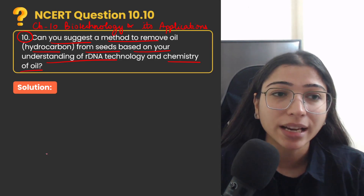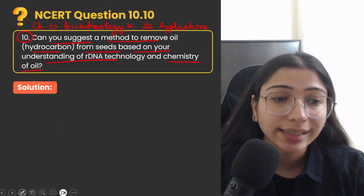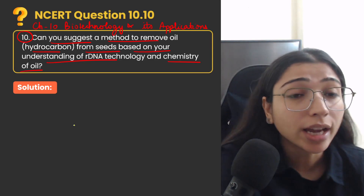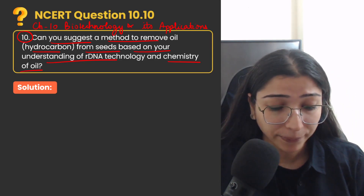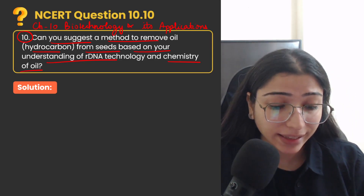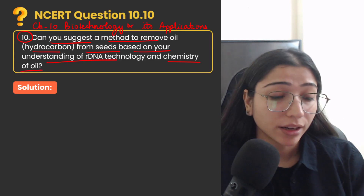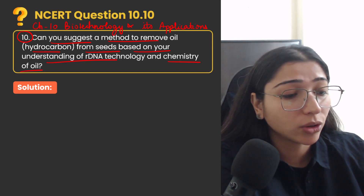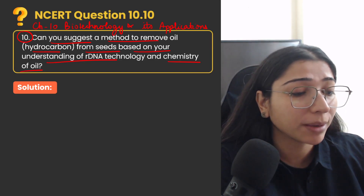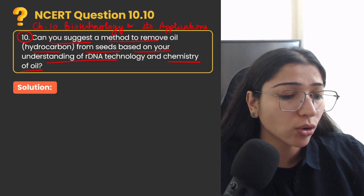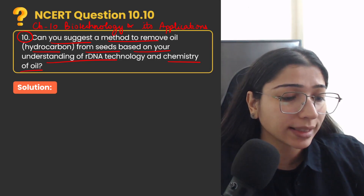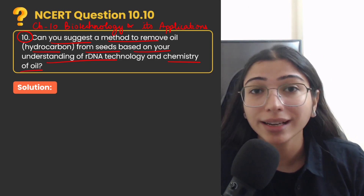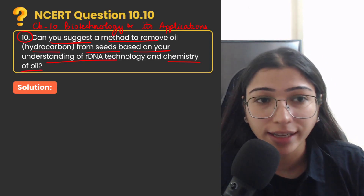Toh sabse pehle humein pata hona chahiye ki jo oil containing seeds hoti hain, unme se hum kaise oil remove kar sakte hain based upon our knowledge of chemistry of oil. Toh basically bachho, oils jo hoti hain seeds mein, what are they made up of? They are basically made up of glycerol and fatty acids.